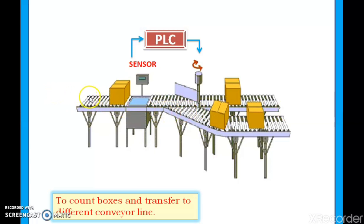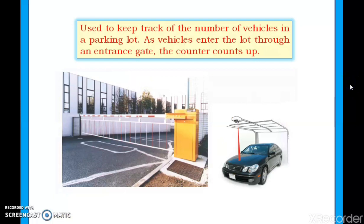It may also be required to count boxes on a conveyor. Boxes come from one side and when a particular count is reached, an arm shifts them to another side of the conveyor. Similarly, we may need to count cars going into a parking lot. A fixed number of cars enter, and afterwards the door is closed. All these scenarios require a counting operation.